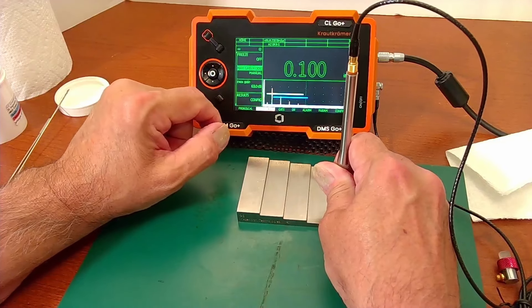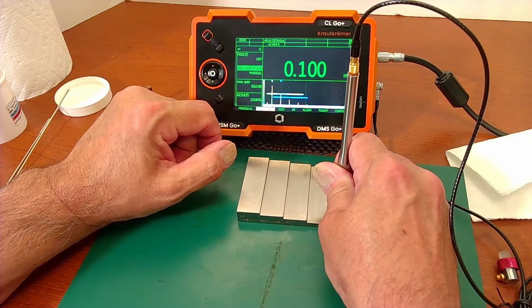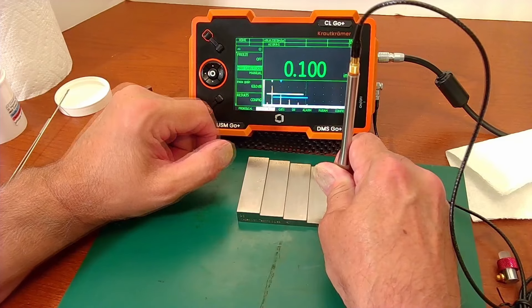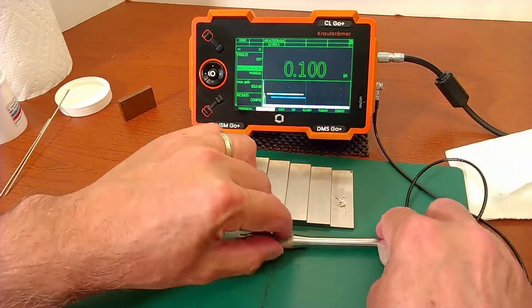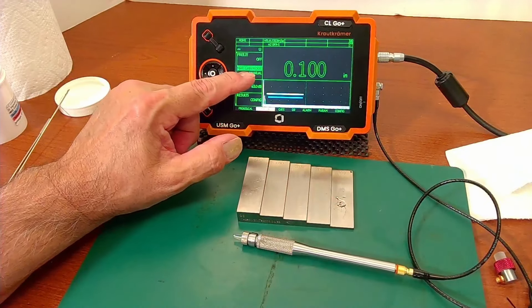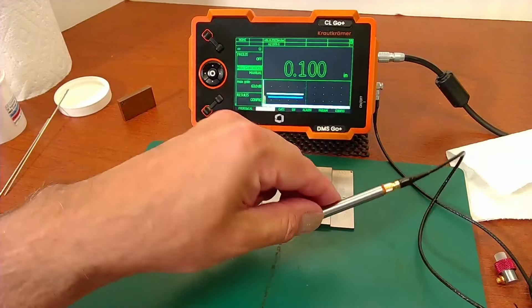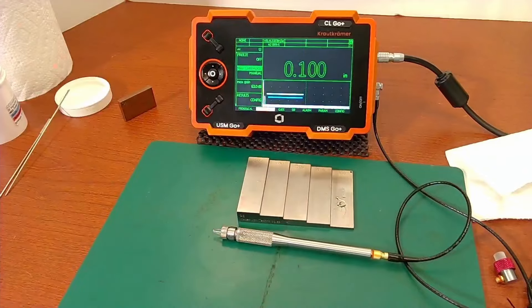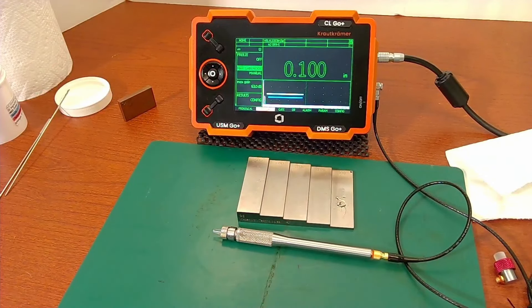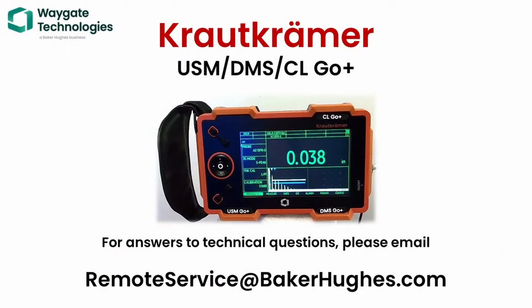That's one way to get the DMS Go adjusted manually to work with the K-Pen probe, which doesn't come with a predefined setup file. So if you have any questions, please feel free to reach out to remoteservice@bakerhughes.com, and we are always happy to help you out. Thank you for joining me again. This is Dan with Krautkramer, and we'll catch you next time.